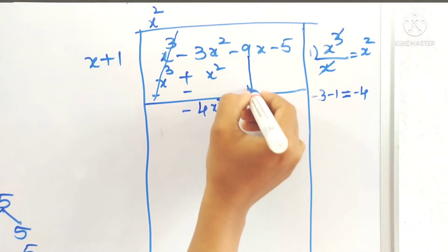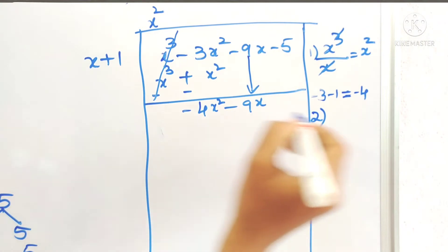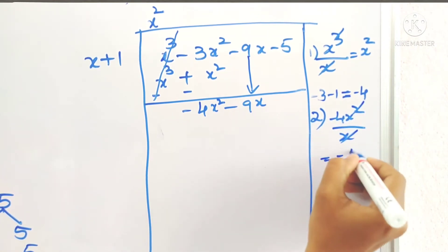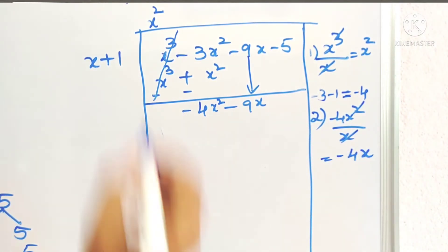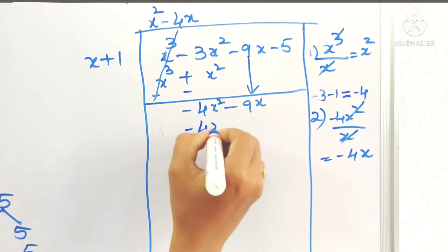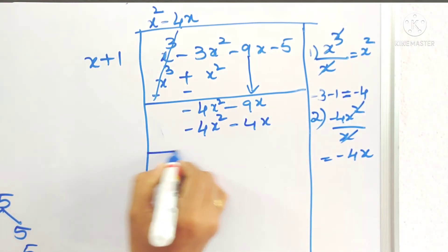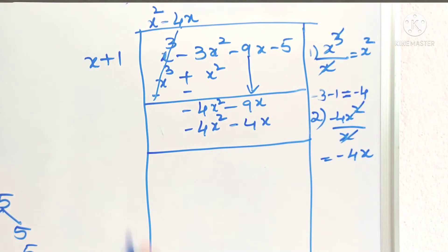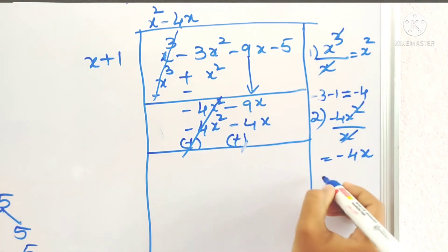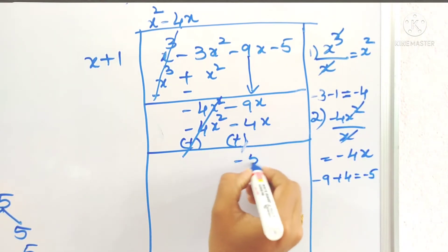Bring down the next term: minus 9x. For the second term in the quotient, take minus 4x square divided by x, which gives minus 4x. Multiply: x into minus 4x is minus 4x square, and plus 1 into minus 4x is minus 4x. Change the signs. Minus 4x square cancels. Minus 9 plus 4 gives minus 5, so we have minus 5x.